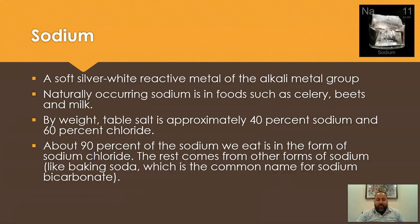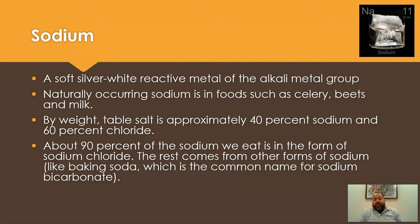Sodium is a soft silver-white reactive metal of the alkali metal group. You can see it on the periodic table in the upper right corner. Naturally occurring sodium is in foods like celery, beets, and milk. By weight, table salt is 40% sodium and 60% chloride — so sodium is actually the smaller part. About 90% of the sodium we eat is in that table salt form, NaCl. The rest comes from other forms like baking soda.